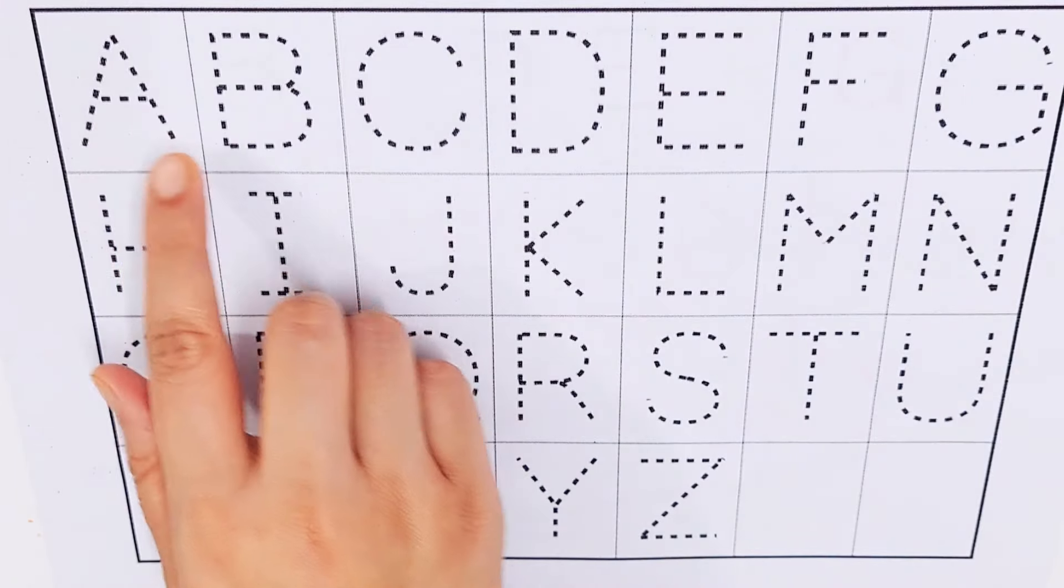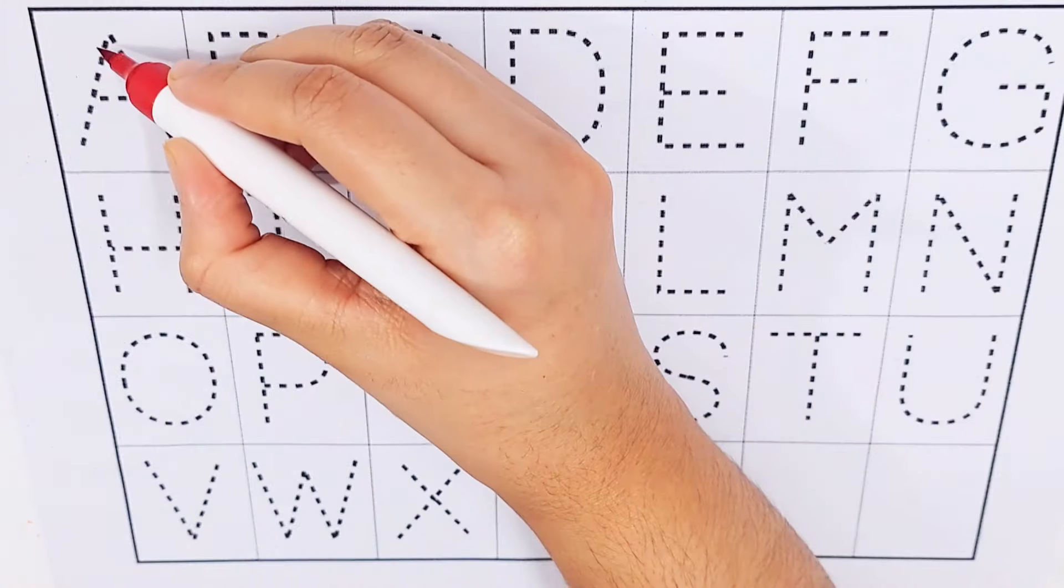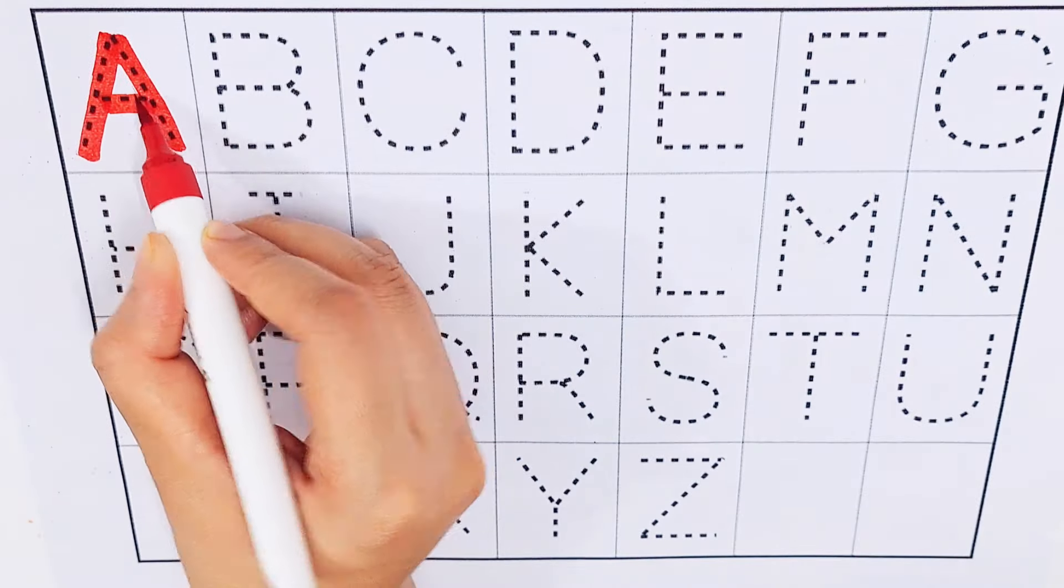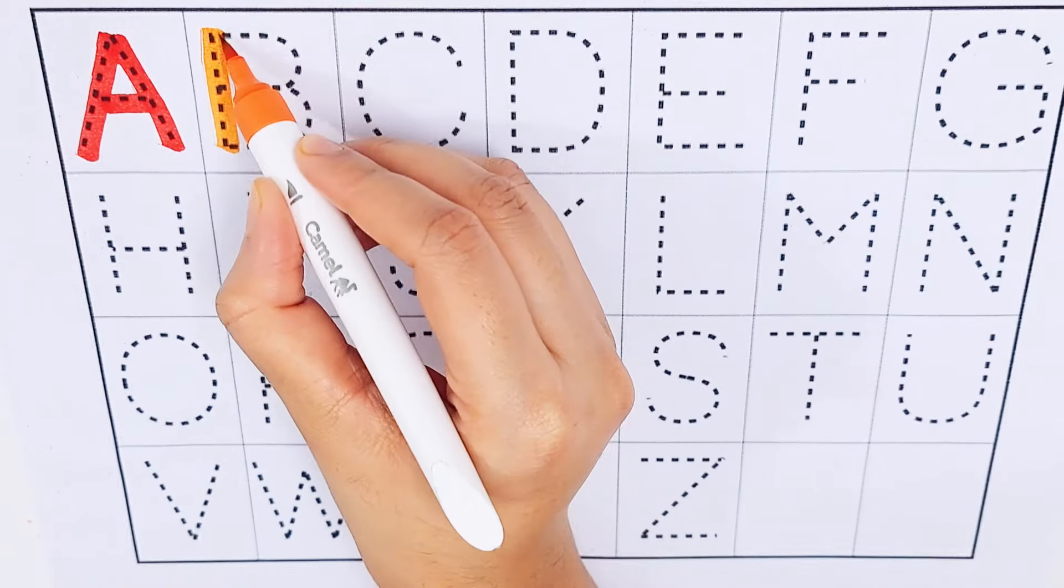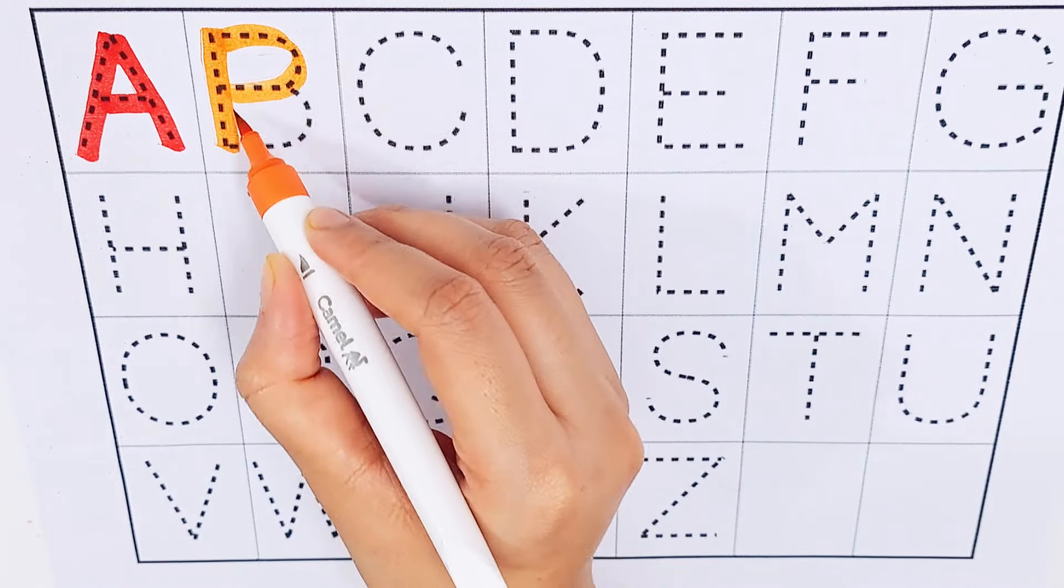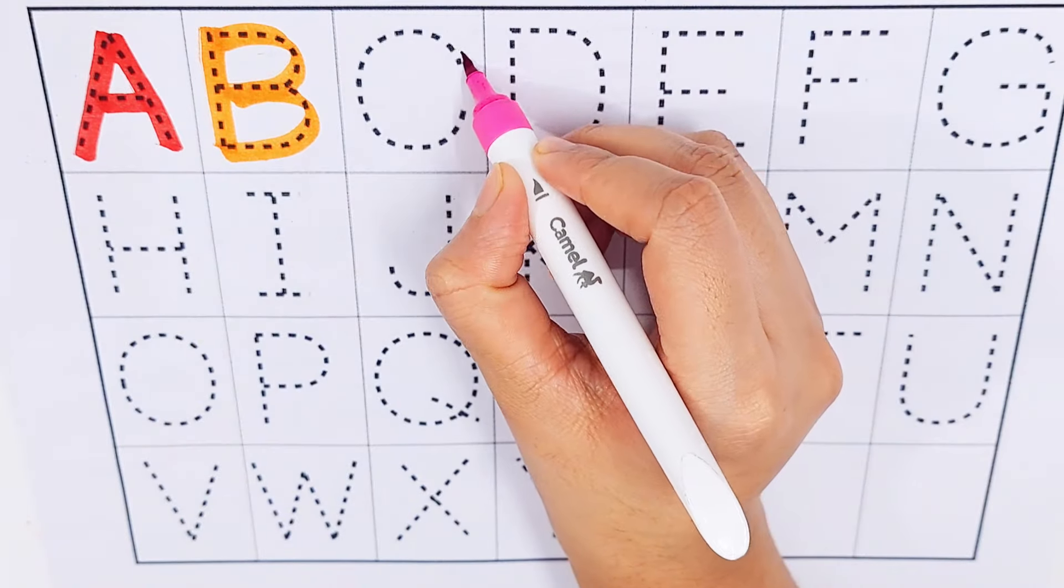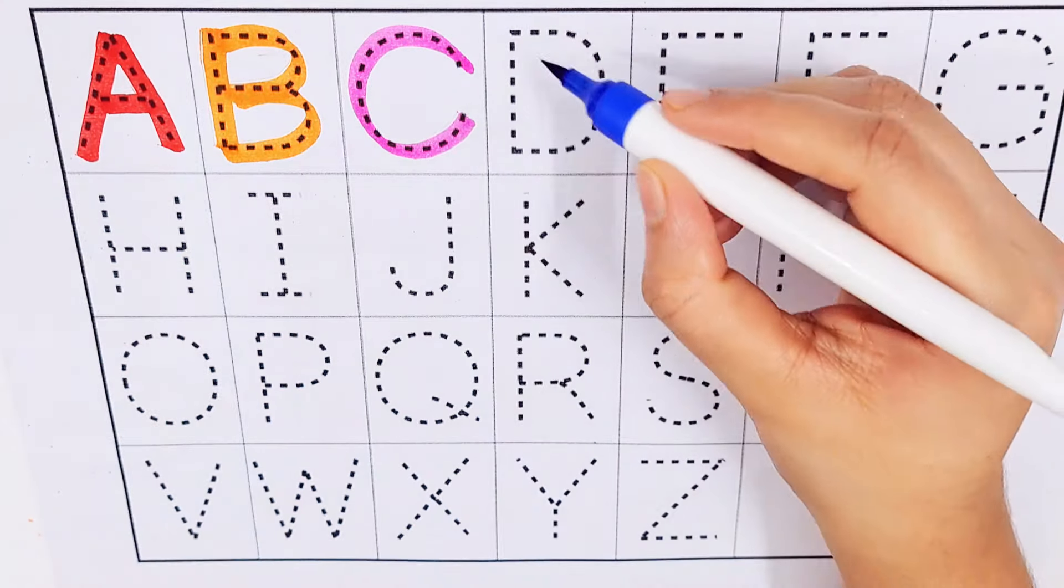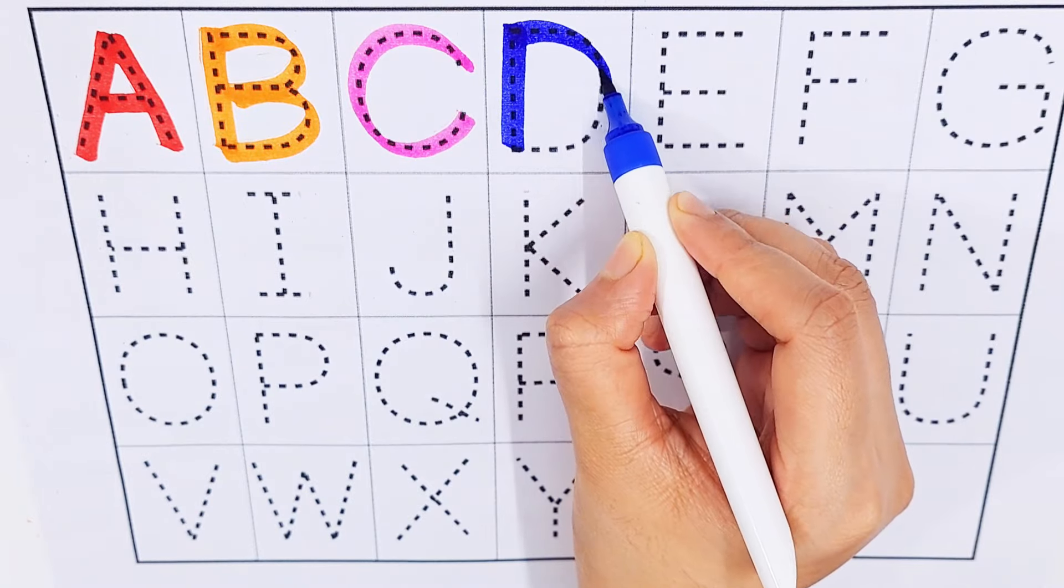A, B, C, D. A, A for ax. B, B for bat. C, C for clock. D, D for duck.